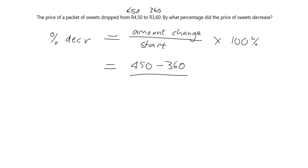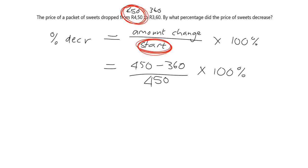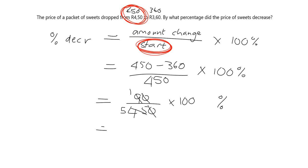The important thing when looking at percentage increase or decrease is that we always relate it to where things started. The price started at R4.50, which is 450 cents. So: 450 minus 360 equals 90. Then 90 over 450 multiplied by 100. Cancelling down — 9 into 9 is 1, 9 into 45 is 5 — gives us 100 over 5, which is 20. So the price dropped by 20 percent.